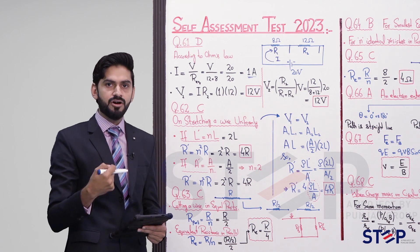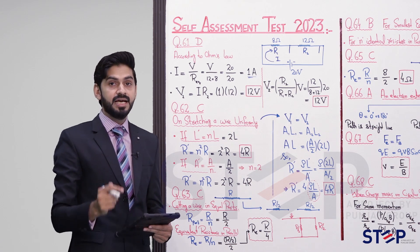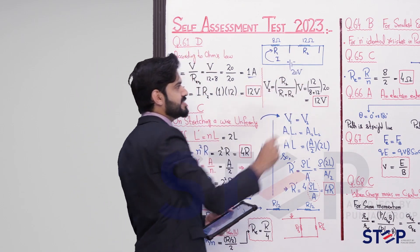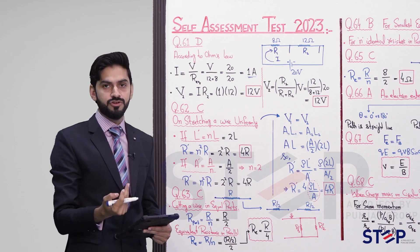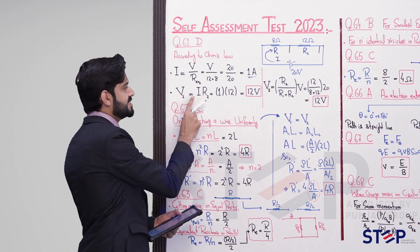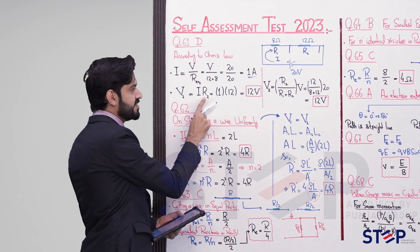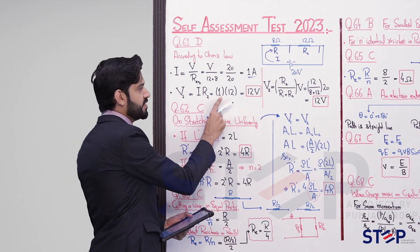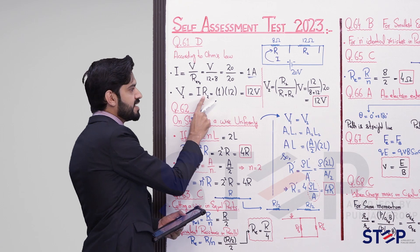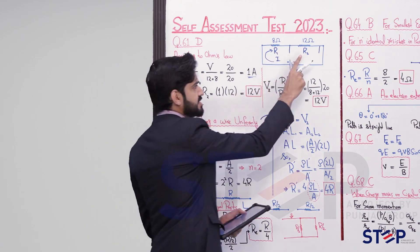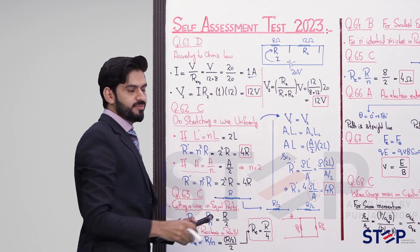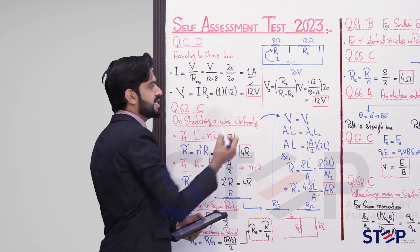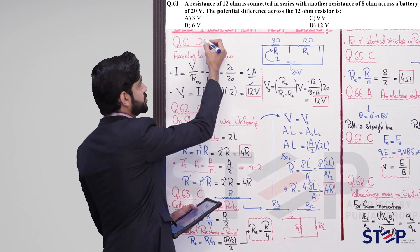This 1 ampere passes through both R1 and R2. Now we need to find V2 — the potential difference across R2 (which is the 12 ohm resistor). By Ohm's law, V2 = I × R2. Since I = 1 ampere and R2 = 12 ohms, multiplying gives V2 = 12 volts.